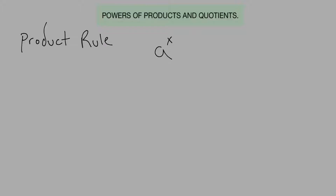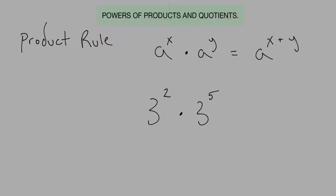The first rule is the product rule. That says if you have a to the x times a to the y, that equals a to the x plus y. So if you have like three squared times three to the fifth power, that equals three to the two plus five, or three to the seventh. Basically you have to have the same base. When you're multiplying them together, you add the exponents together. That's the product rule — I suggest writing these out, as you'll be referring back to them.